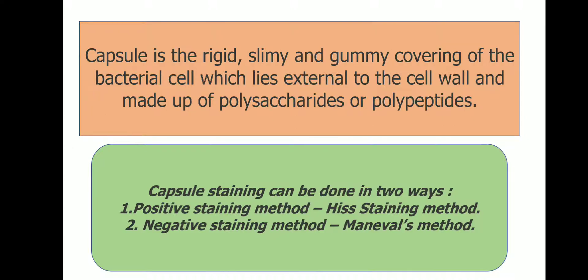Capsule staining can be done in two ways: positive staining method and negative staining method. The positive staining method is by Hiss staining method, and the negative staining method is by Manuel's method. In positive staining method, the capsule gets stained. In case of negative staining method, the capsule is not stained.